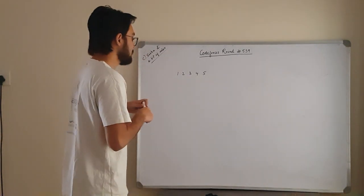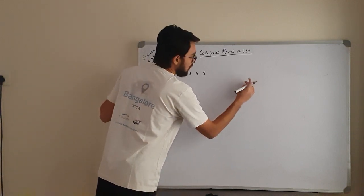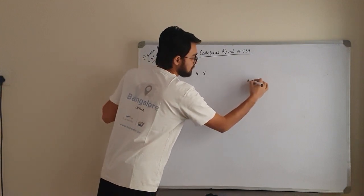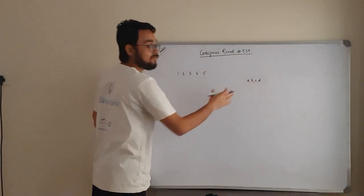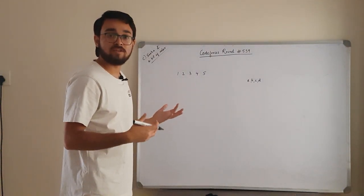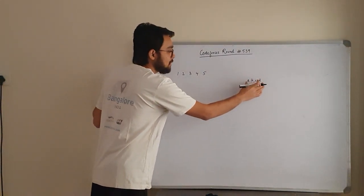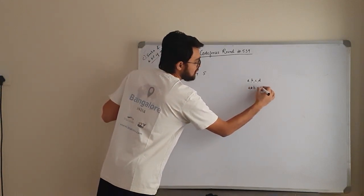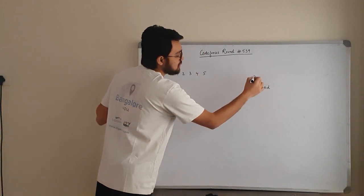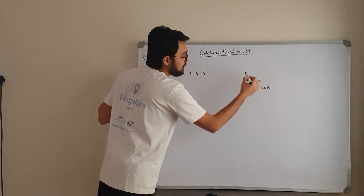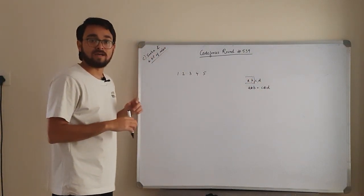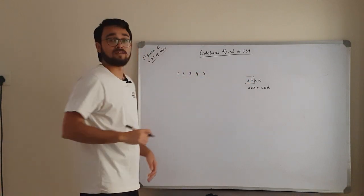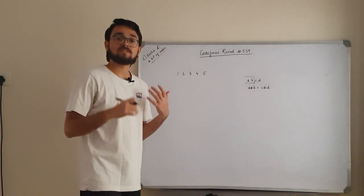What they mean is: say you choose a segment having 4 contiguous elements A, B, C, D. For this to be a valid answer, A XOR B should be equal to C XOR D — that is, the XOR sum of the left half should equal the XOR sum of the right half. You need to count how many such segments exist in the array.